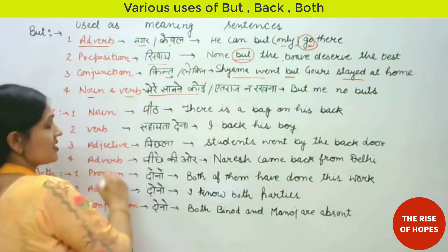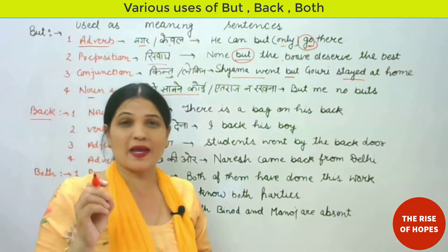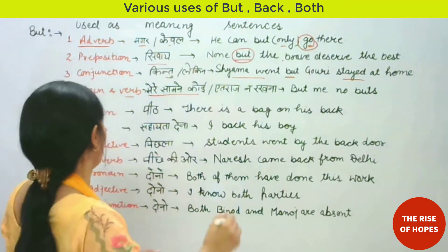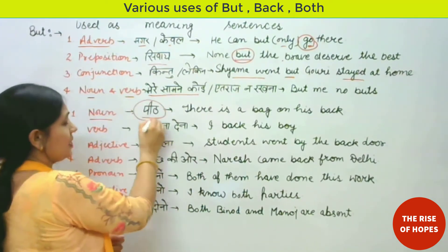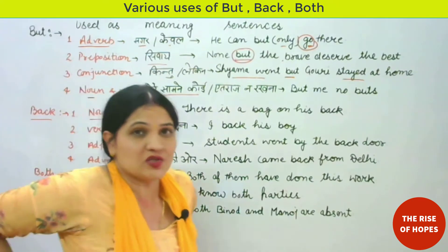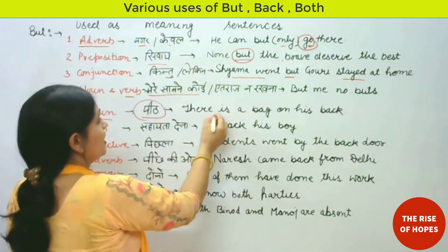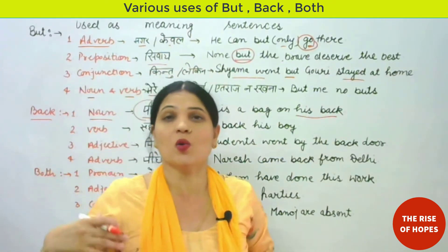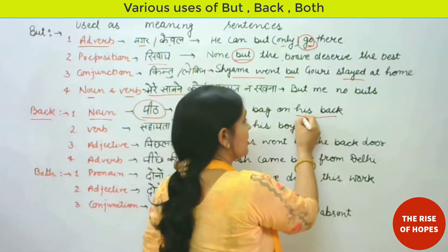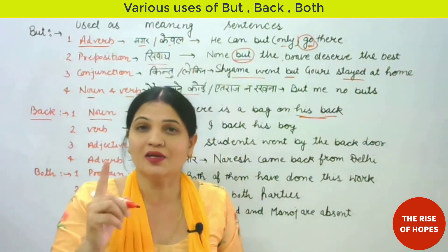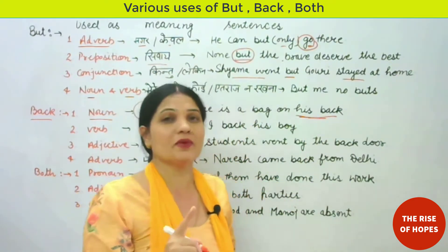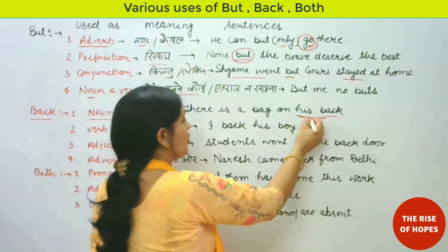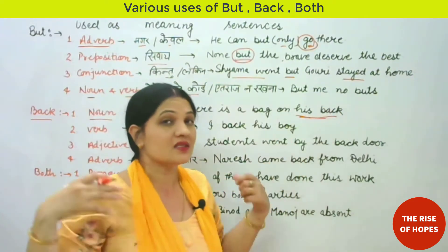The next word is 'back'. In the same way, we will use 'back' in different forms as different parts of speech. As a noun, 'back' gives us the meaning of 'peeth' — our body part. Example: 'There is a bag on his back.' Here 'back' is performing as a noun — it is a body part, and the noun can be used at the start or end of the sentence.